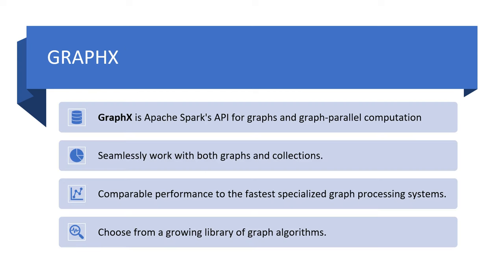GraphX is Apache Spark's API for graphs and graph-parallel execution. It supports network analytics, clustering, classification, traversal, searching, and pathfinding. GraphX optimizes how we represent vertices and edges, including primitive data types. It supports fundamental operations like subgraph, joinVertices, and aggregateMessages, as well as optimized variants of parallel APIs. It works seamlessly with both graphs and collections, and offers comparable performance to the fastest specialized graph processing systems.